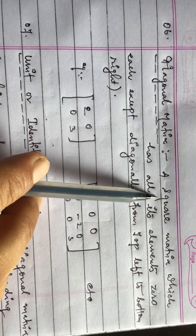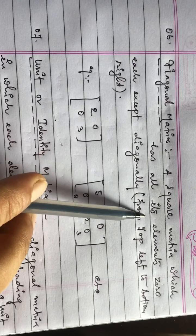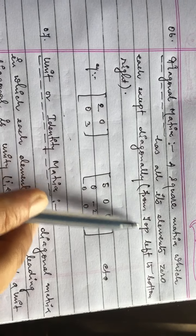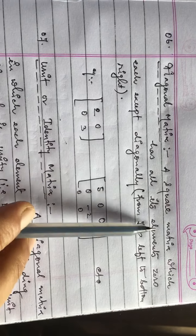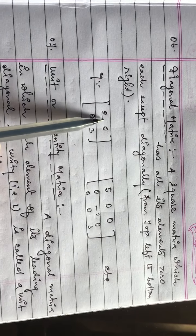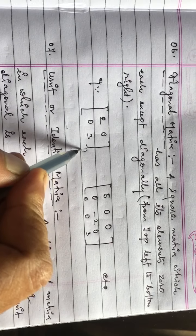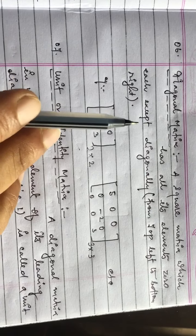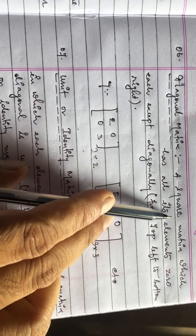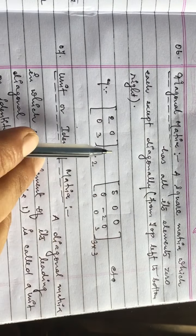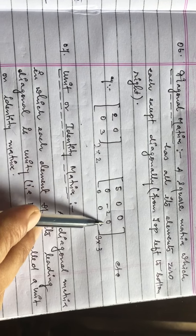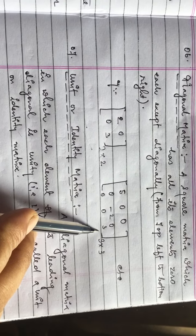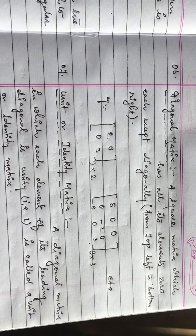Diagonal matrix: A diagonal matrix is a square matrix in which all elements are zero except those diagonally from top left to bottom right. The diagonal matrix is always a square matrix — the number of rows equals the number of columns, for example two by two or three by three. Elements along the diagonal from top left to bottom right can be non-zero; all others are zero.